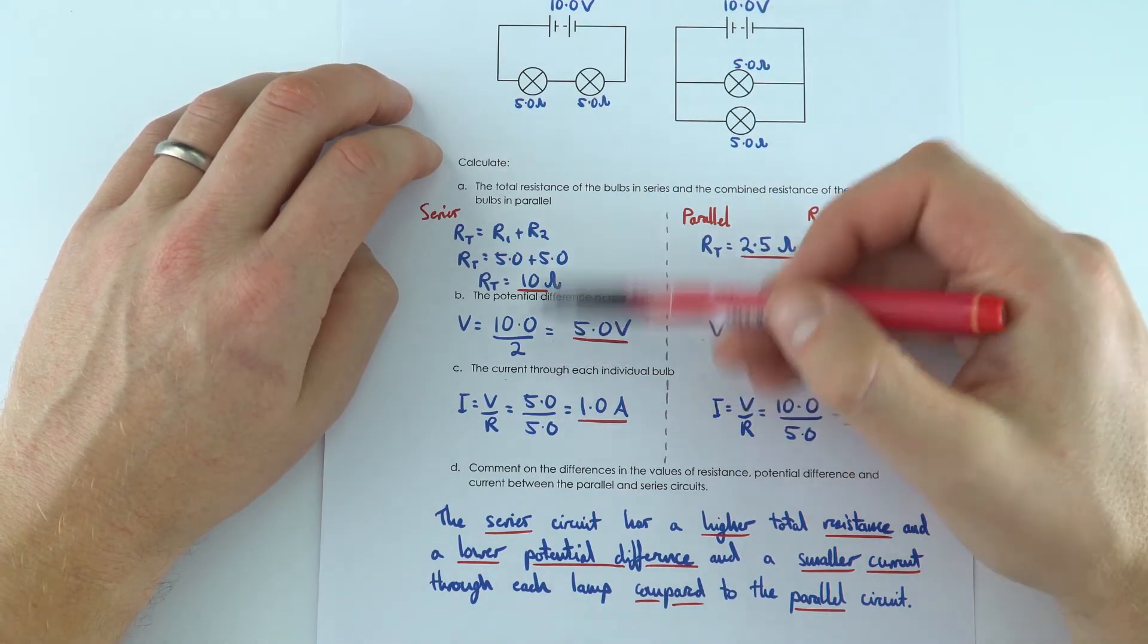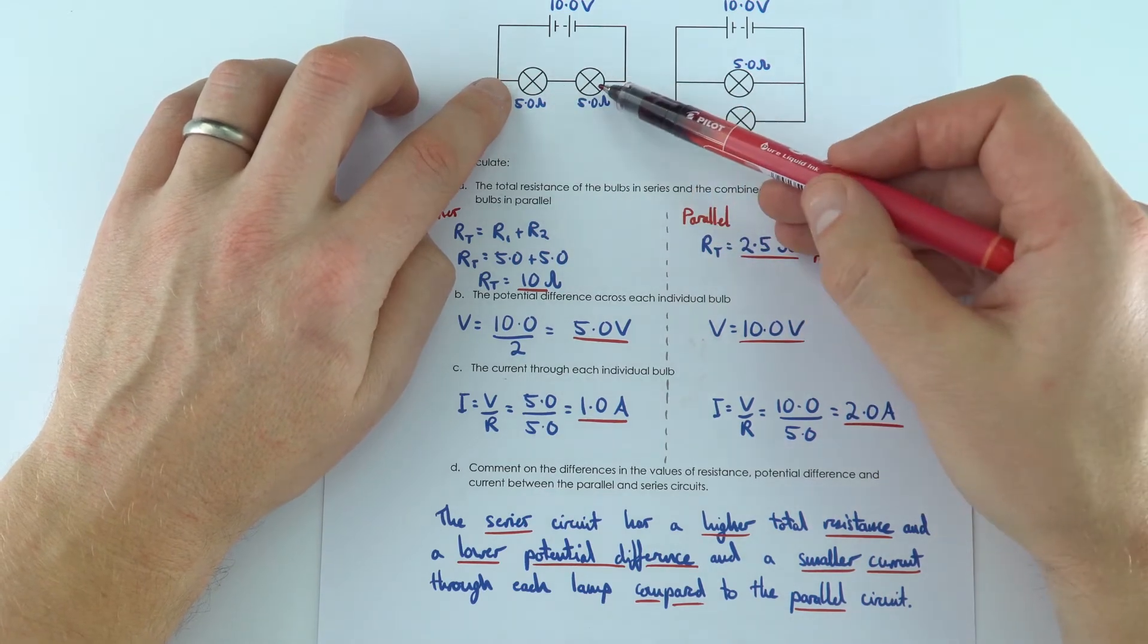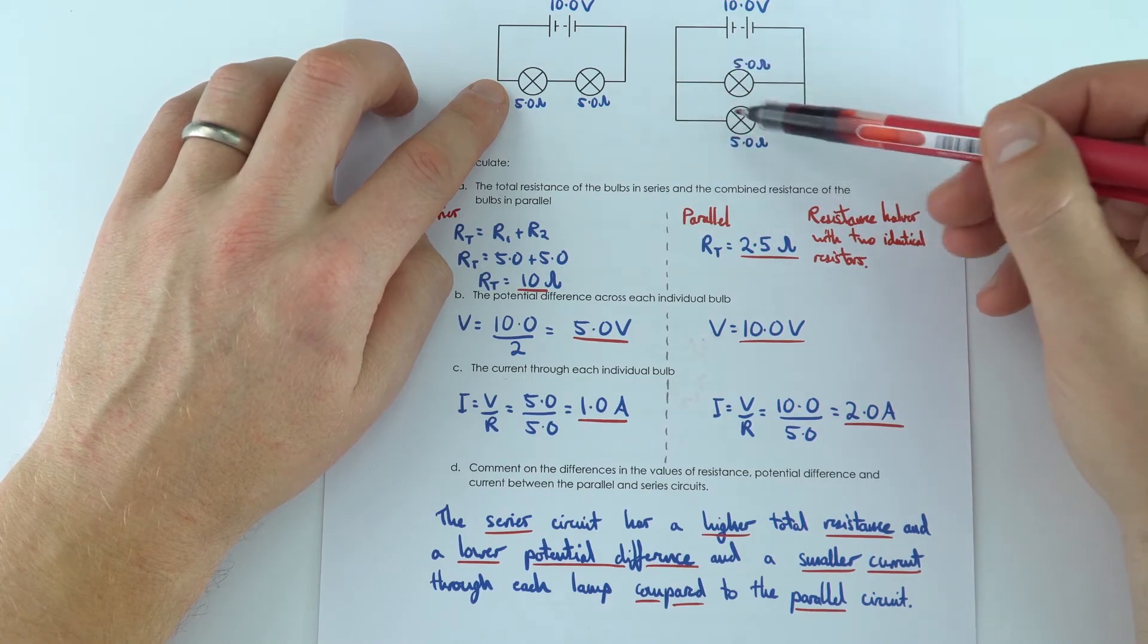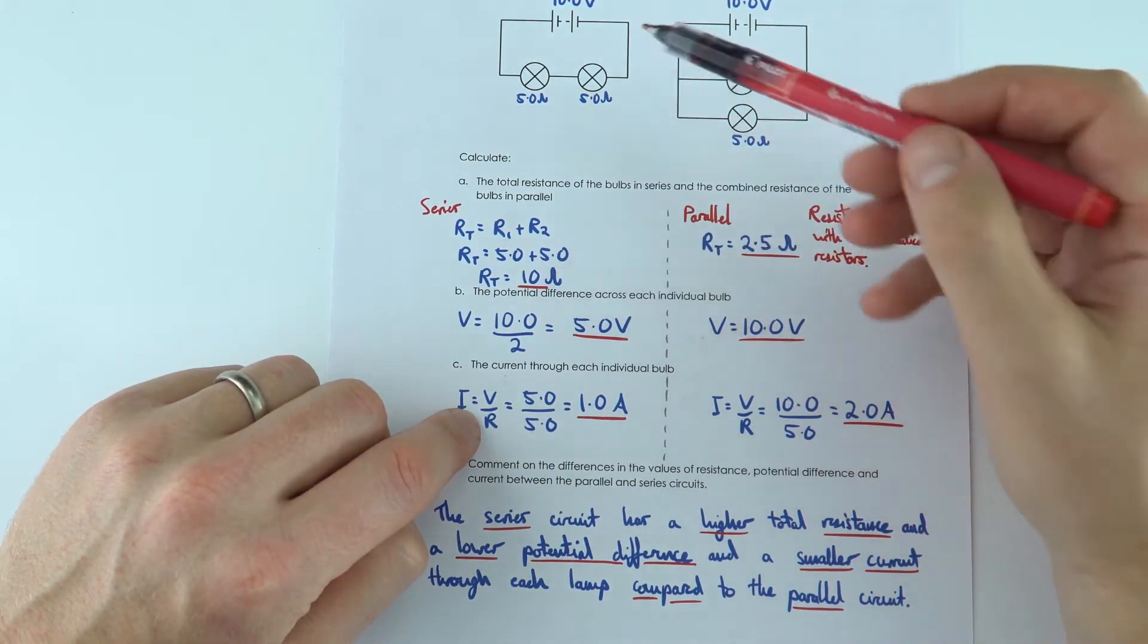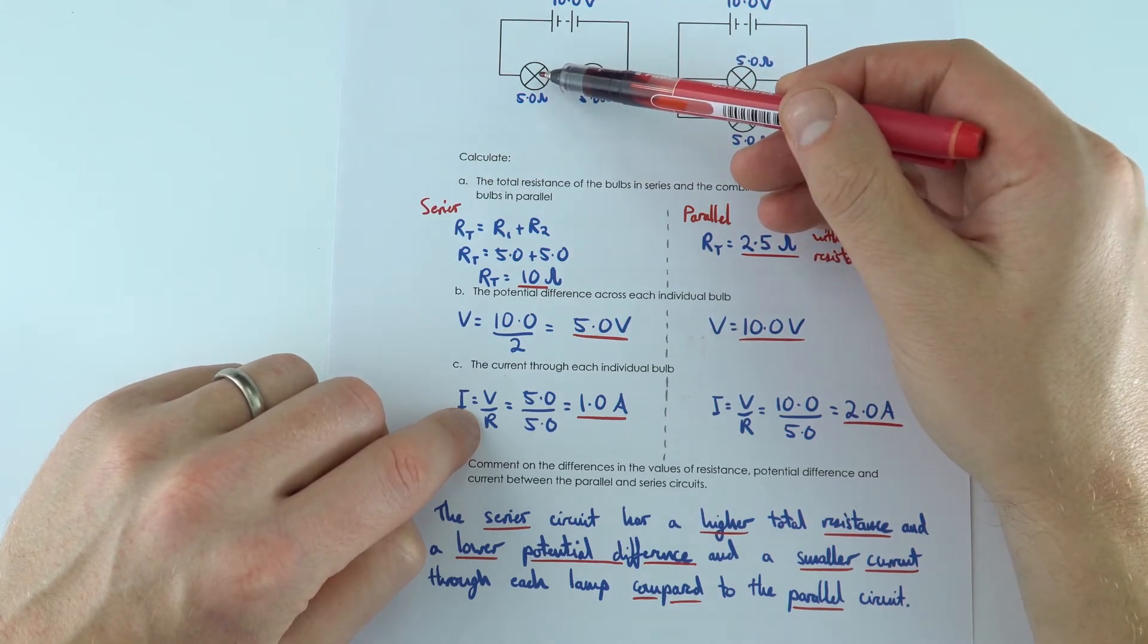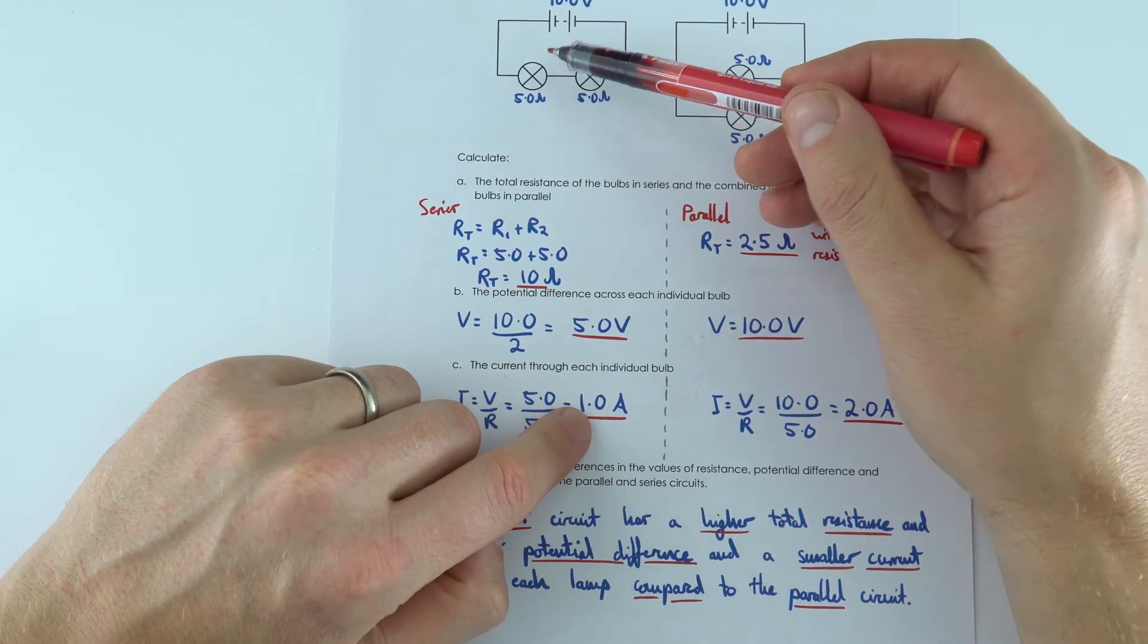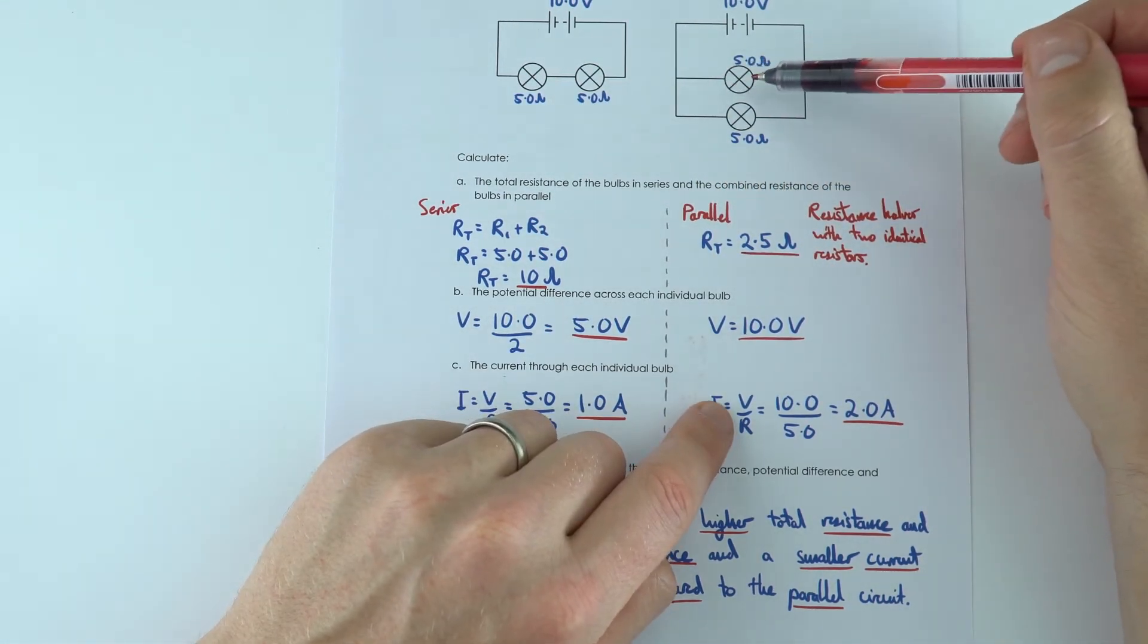The potential difference across each bulb here, that 10 volts is split equally so 5 volts here and 5 volts there whereas here they both have 10 volts across them because it's a parallel circuit. And the current was worked out using these values. If it's got 5 volts across it with a resistance of 5 ohms this gives a current of 1 amp in each of those lamps whereas here they've got a current of 2 amps.